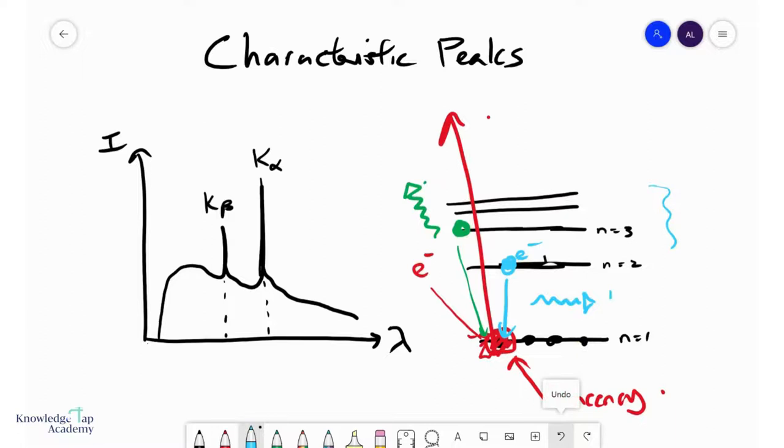The two to one transition we call the K-alpha, which is corresponding to this peak. The three to one transition is the K-beta photon, corresponding to this peak over here. Because of the sheer number of these photons being released, that is why there is a spike in their intensity.